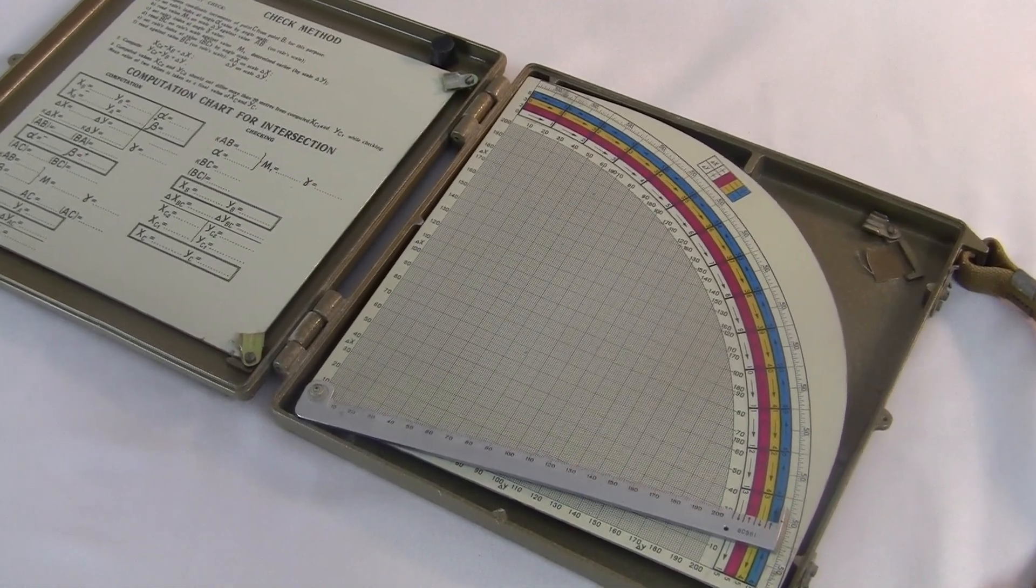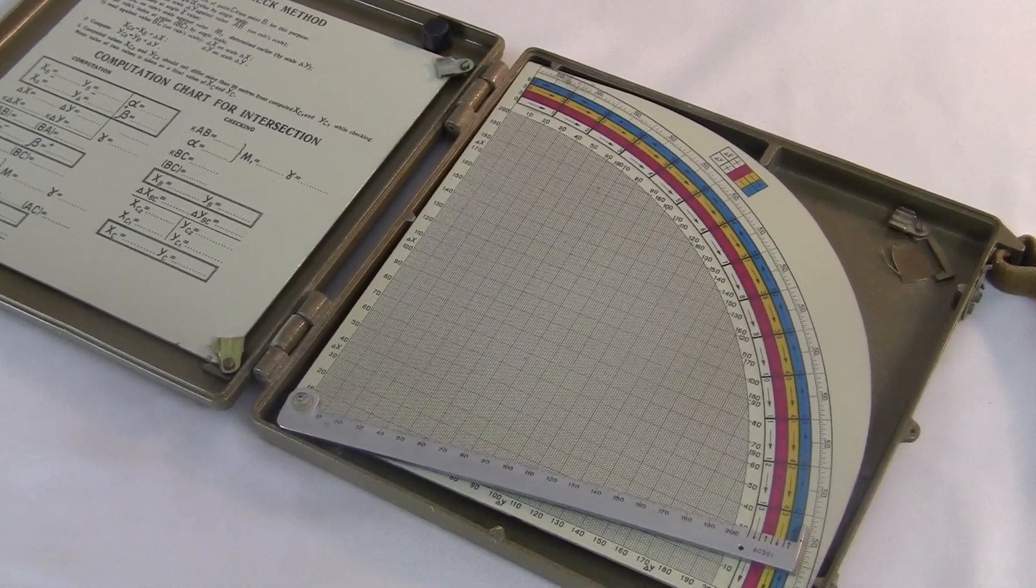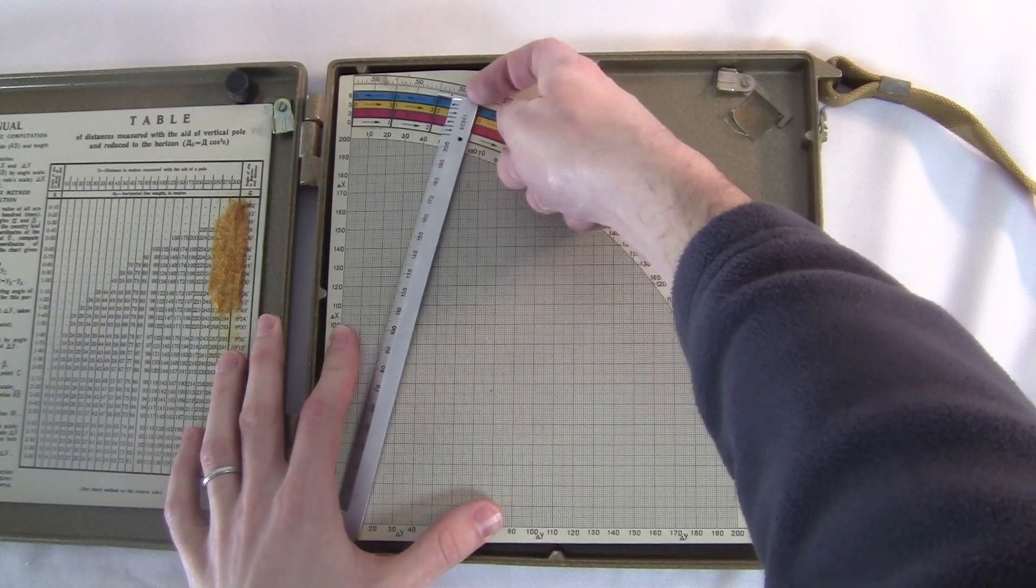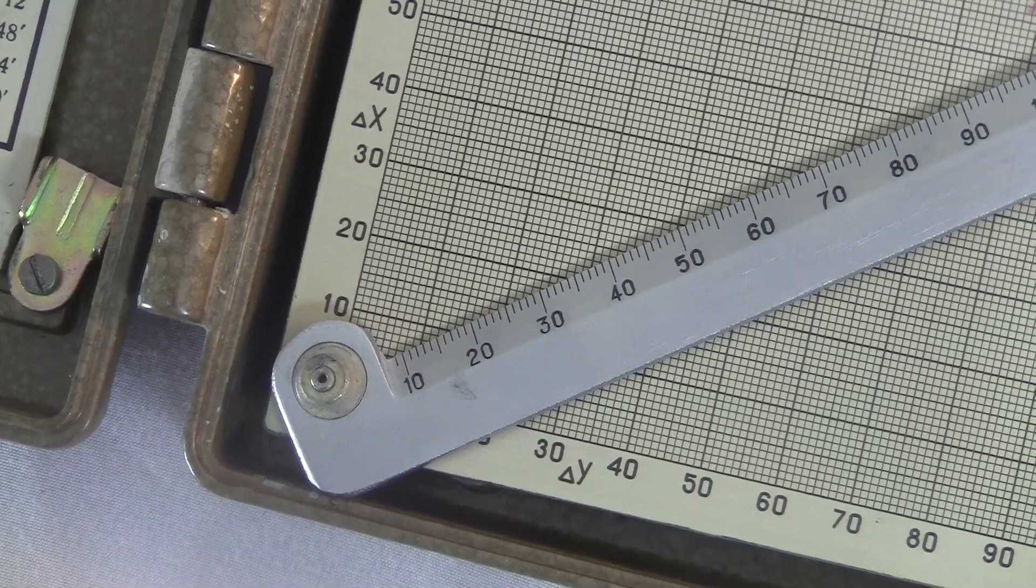It has this quarter-circled chart printed on hard aluminum with grid markings from 0 to 200, and a pivoting arm that's also marked off from 0 to 200.